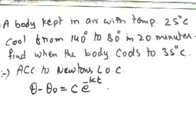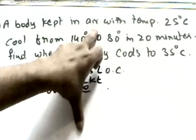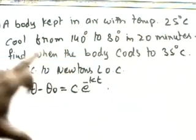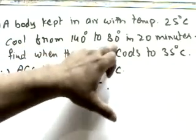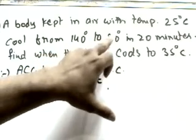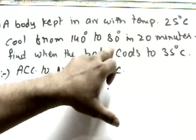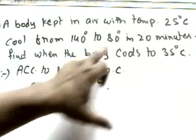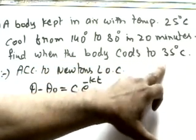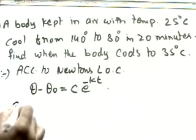Now let's look at a question. A body kept in air with surrounding temperature θ₀ = 25°C cools from 140°C to 80°C in 20 minutes. Find when the body cools to 35°C. We will have three cases. The question will be very easy.